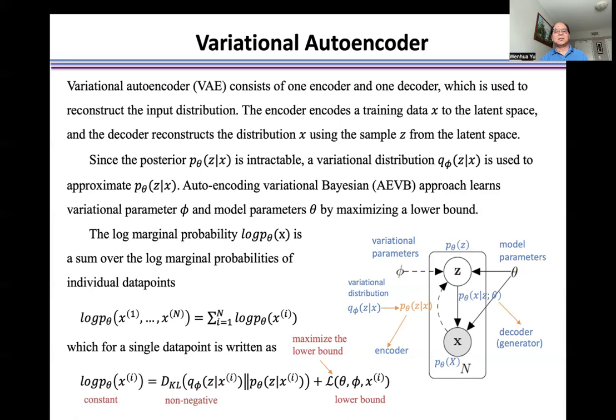For a single data point, the log likelihood is equal to the sum of KL divergence and the lower bound. Because KL divergence is non-negative, maximizing the log likelihood is equivalent to maximizing the lower bound.